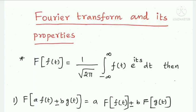Mass Fourier Transform and Its Properties. The Fourier Transform of f(t) is defined as: capital F of f(t) equal to 1 over root(2π) times the integral from minus infinity to plus infinity of f(t) times e^(iTs) dT. This is the Fourier Transform formula.